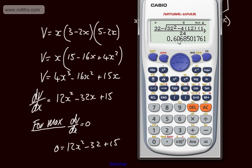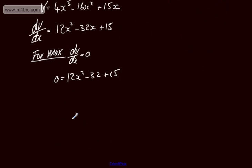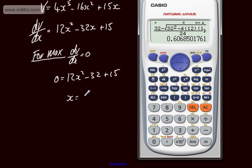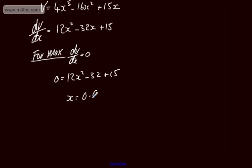So we can say now at this stage that the value of X, X is equal to 0.607. Now that is 3SF, so let's write three significant figures. So this is the value of X that makes now the capacity of the box a maximum.